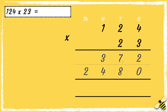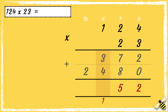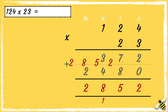The next step is to add the two answers together. 2 add 0 is 2. 7 add 8 is 15 — we can carry the ten tens over to the hundreds column to make 100. Then 3 add 4 add 1 is 8, and 2 add nothing is 2. So the answer is two thousand eight hundred and fifty-two.